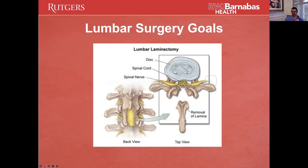This view shows what we're removing — the spinous process and the lamina. In this case I would argue we need to remove a little more, because we're edging into the joint. These are the joints where the different levels are connected. We would need to get a little closer out towards the joint to actually decompress these nerve roots, so this would be a somewhat inadequate laminectomy, but it's a good visual.